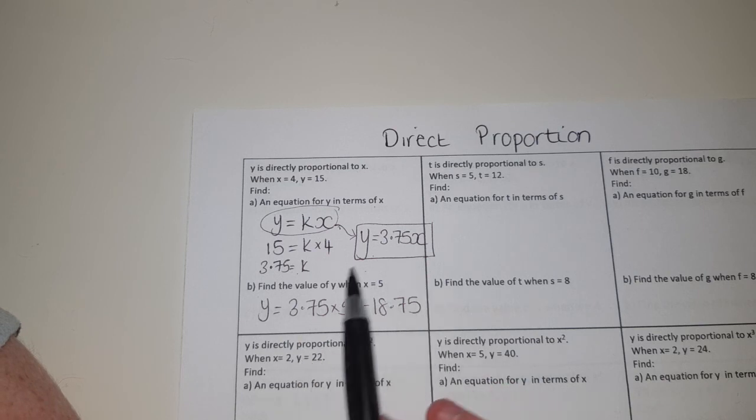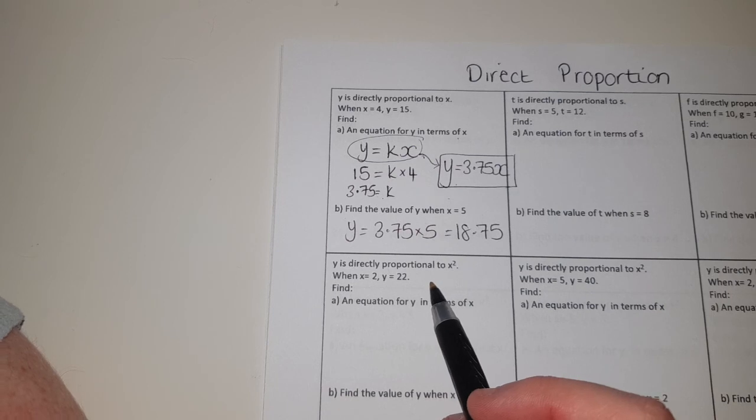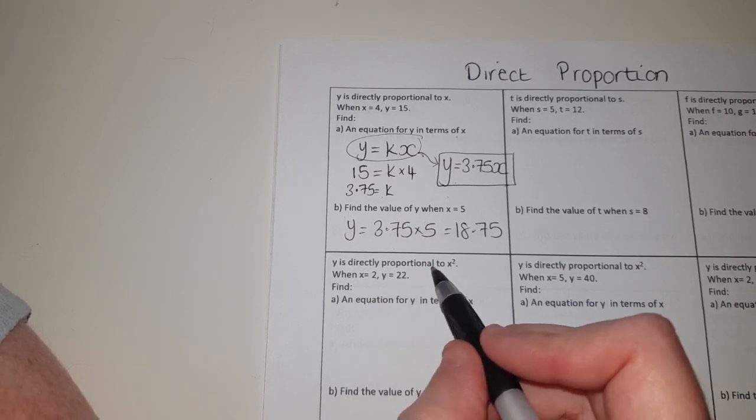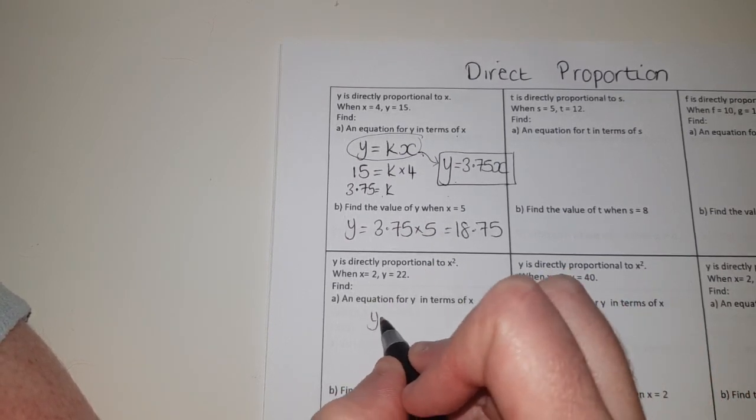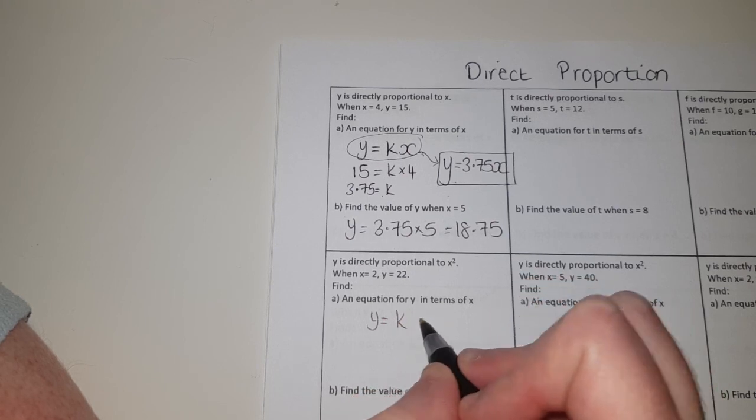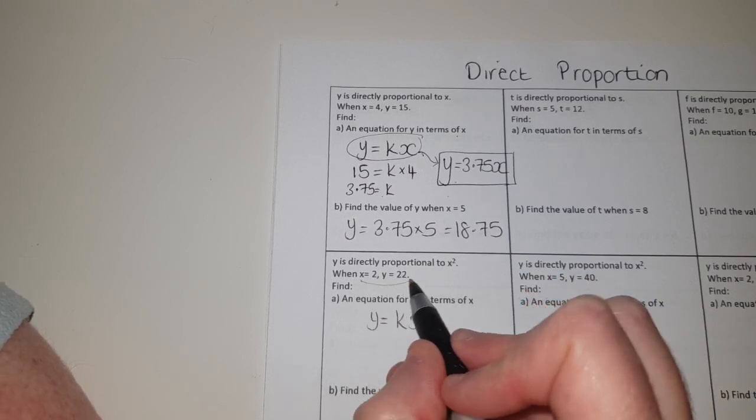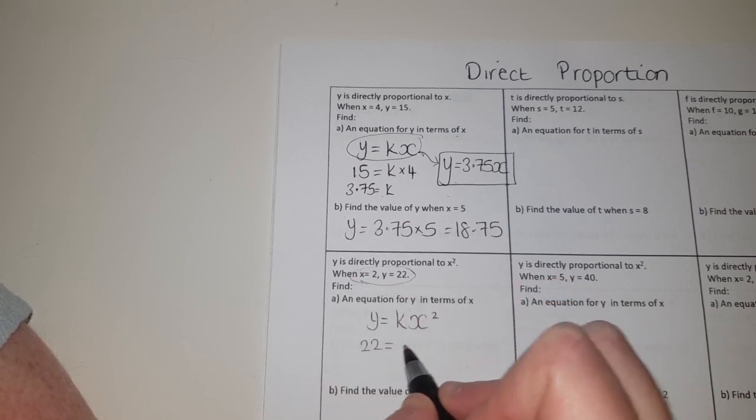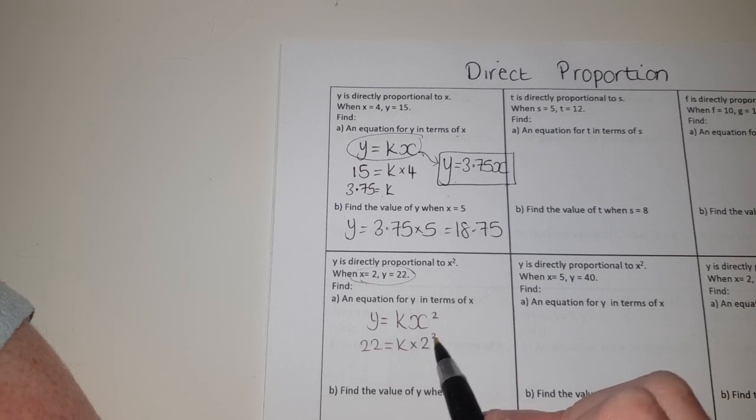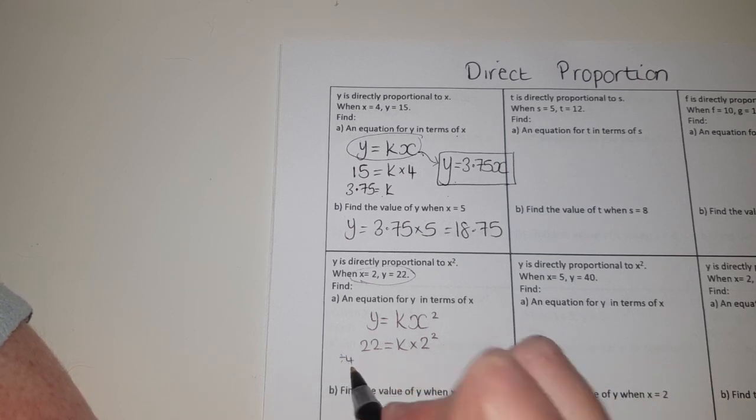You can have directly proportional to things like x squared instead. So if it's directly proportional to x squared, then y has to be equal again to some multiple of x squared. This time substituting the numbers like we've got before, so 22 is equal to k times 2 squared. 2 squared is going to give us 4, so if I divide both sides by 4 it's going to give me 5.5.